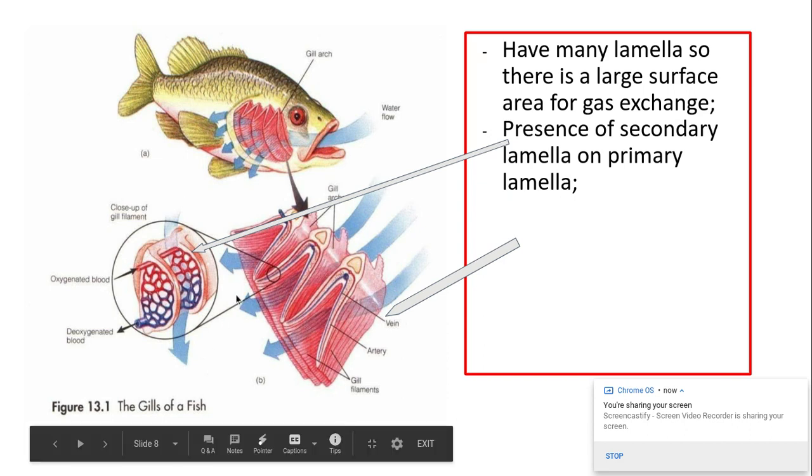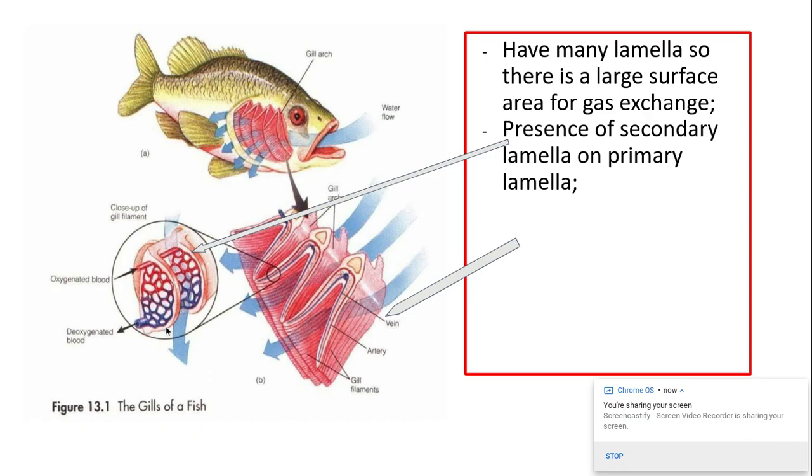These primary lamellae have secondary lamellae on them. You can see them in this image here, the secondary lamellae here that almost protrude from the primary lamellae. These are from the mark scheme, which is why they're in a red box. They're very important marking points.